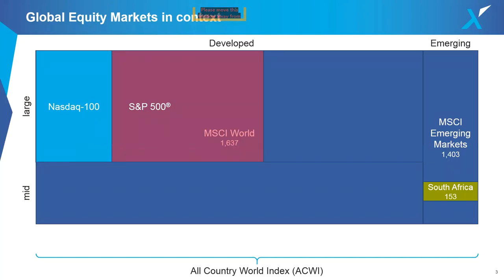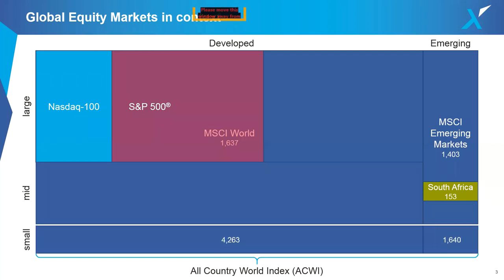South Africa is deemed an emerging market. The JSE All Share Index has about 153 stocks — a far smaller universe than what's available globally. South Africa makes up only about 4% of the investable opportunity set within emerging markets, and about half a percent of the All Country World Index. Small-cap companies, while more numerous, represent a much smaller subset of the total universe by market cap.